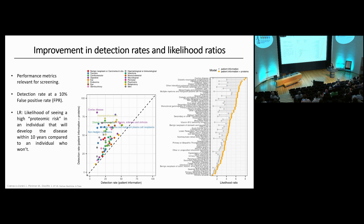We quantified this using metrics more intuitive for screening. The first plot shows detection rates at a 10% false positive rate — x-axis for the clinical benchmark and y-axis when we add the proteins. For all 67 diseases, we see better detection rates with our proteomic risk scores.